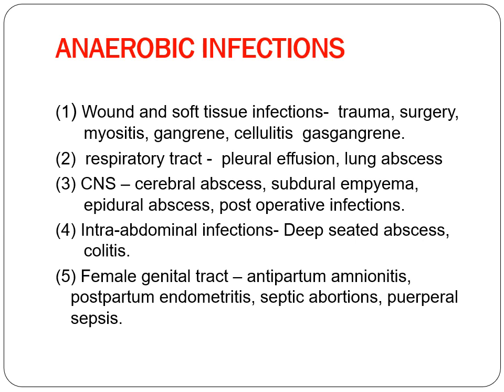In abdominal infections — if there is peritonitis or any injury to the intestine — anaerobic infection is likely, because the ratio of aerobes to anaerobes is very high in the intestine, so certain conditions can lead to anaerobic infection. The female genital tract is also a site where you can suspect anaerobic infection.